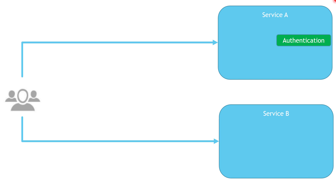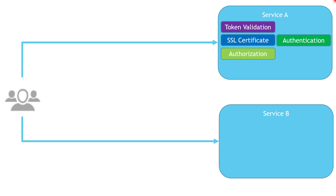Since we've mentioned authentication, we cannot ignore authorization. After we know who is trying to call our service, we need to check whether this user, system, or service account has the right permissions or privileges to perform certain actions. These two features usually come together. If you are implementing OAuth authentication, the client needs to send a token in every request, and from Service A's side we need to continuously check with every request that this token is still valid.